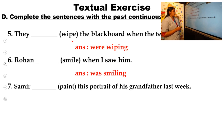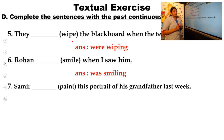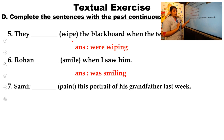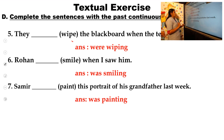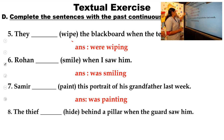Seventh question: 'Samir ___ (paint) this portrait of his grandfather last week.' Samir is singular — only one person. So we use 'was'. Paint plus ing gives 'painting'. The answer is: Samir was painting this portrait of his grandfather last week. Eighth question: 'The thief ___ (hide) behind a pillar when the guard saw him.' The thief is singular — only one person. So we use 'was'. Hide plus ing gives 'hiding'. The answer is: the thief was hiding behind a pillar when the guard saw him.